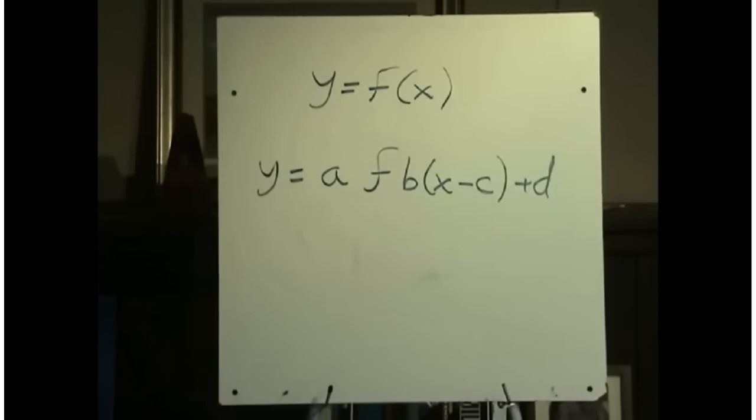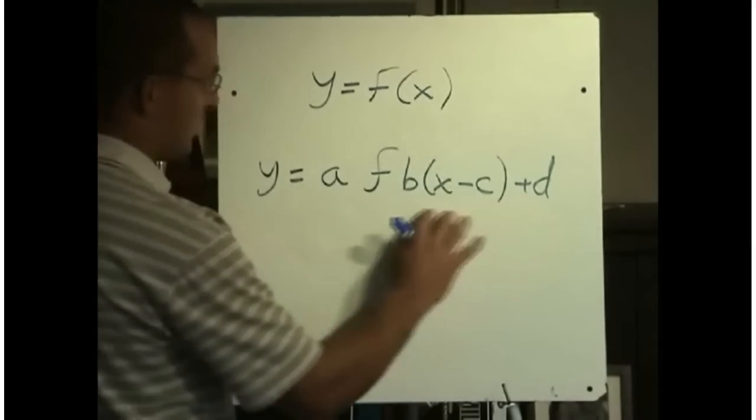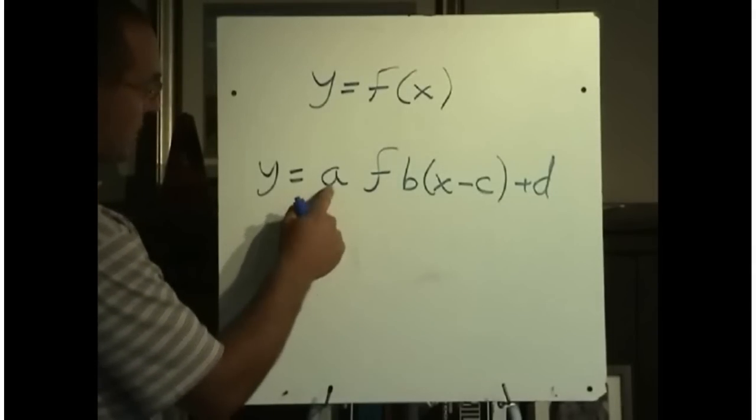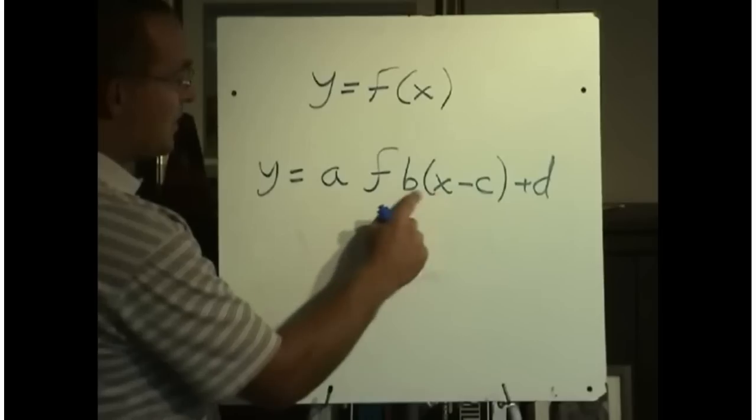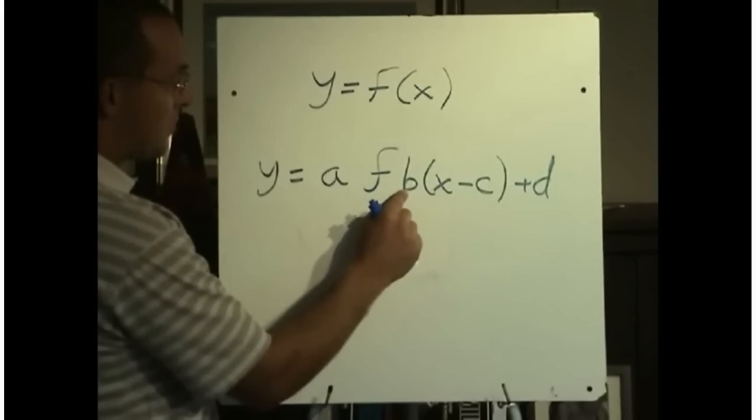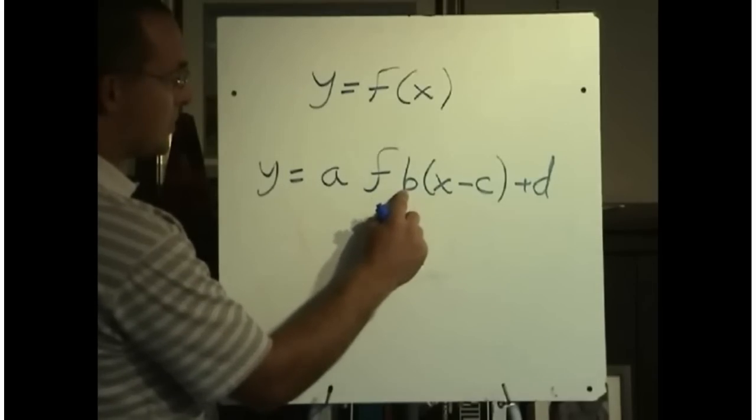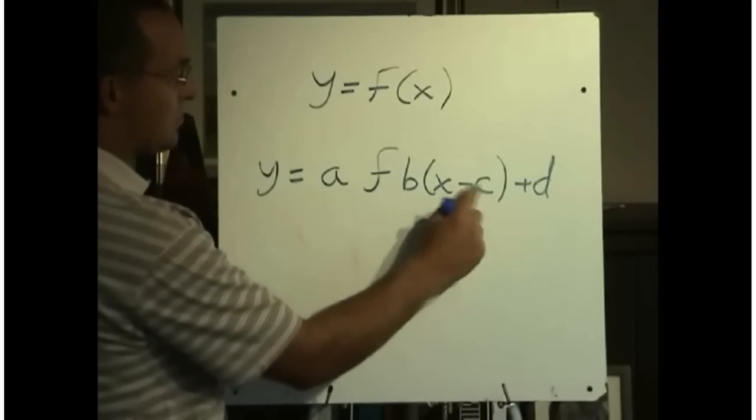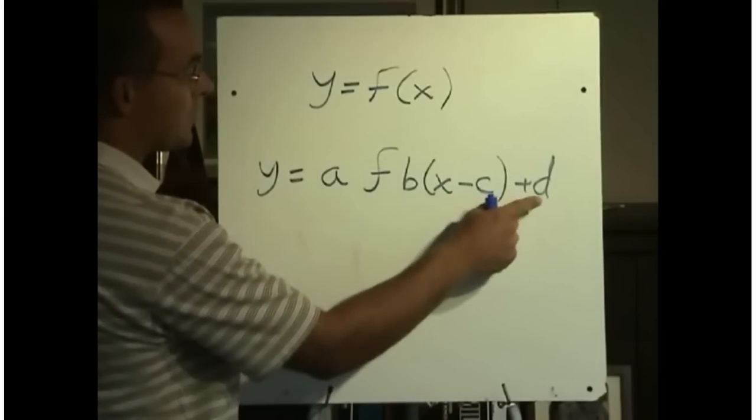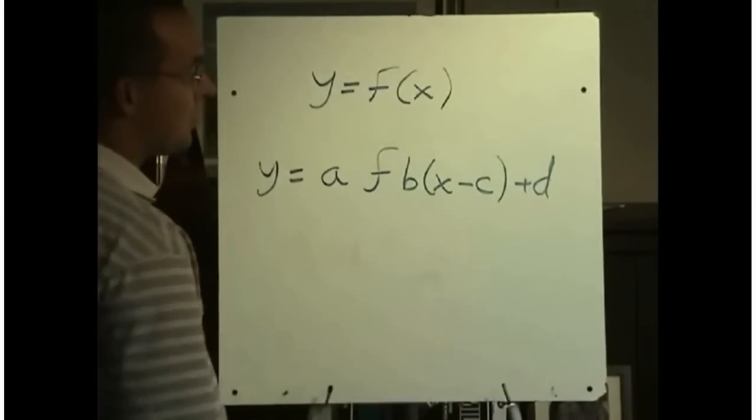So it's very important that we get the function written in this notation so that we can easily tell what the transformations are. So there should be a coefficient in front of f. This would be our vertical expansion compression. And if it's negative, we'll have a reflection in the x-axis. There needs to be a coefficient of x, and this has to be factored out. The b here is your horizontal expansion or compression. And then we have x minus c, so in this case we'd move it right c. And then the number at the end is our vertical translation. In this case we would go up whatever d is.